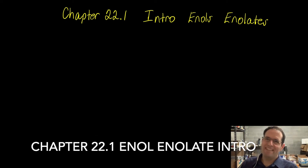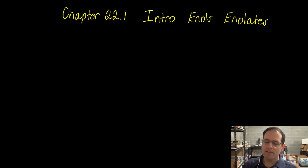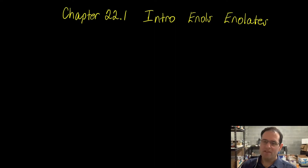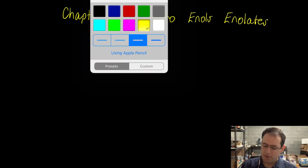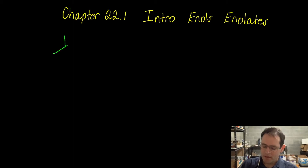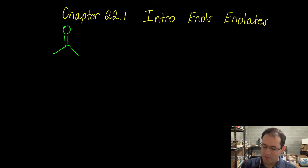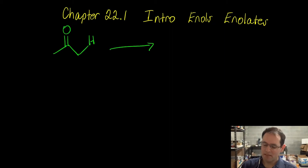Welcome. We are going to be talking about enols and enolates and reactions at the enolate carbon. What we're going to be able to do in future reactions is take acetone, different types of ketones and aldehydes, and perform substitution reactions on them with a base or acid catalyst and some kind of electrophile.